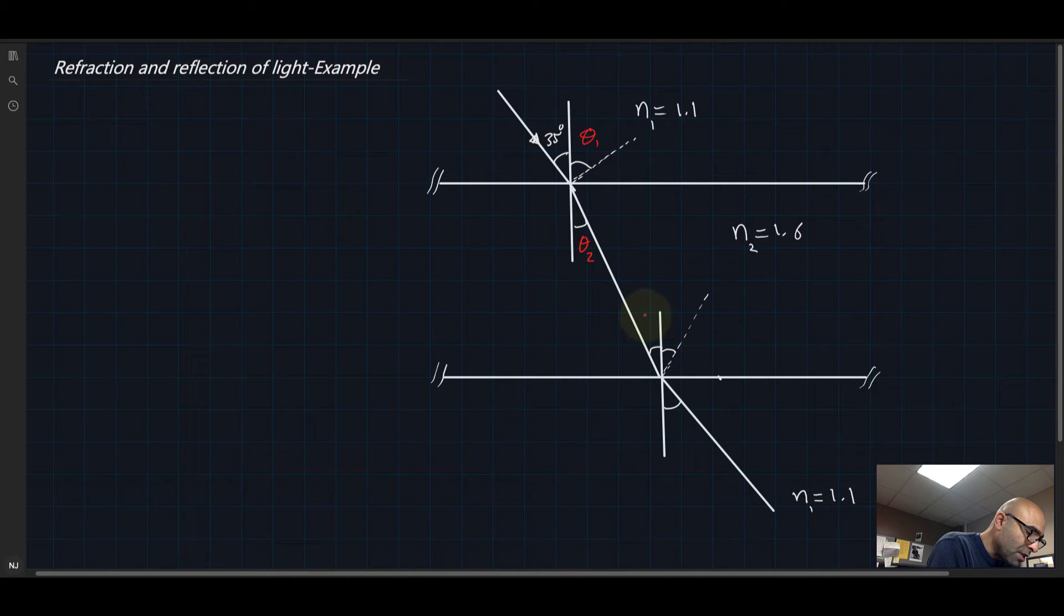This is theta 3, and this is theta 4, and this is finally theta 5. Okay, how do we go about doing this problem? Well, this is reflection of light off a straight surface, so you should know that theta 1 should equal 35 degrees. So that's the first one, that was easy. Now let's find theta 2.